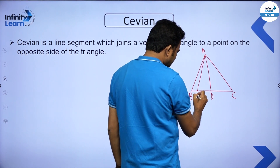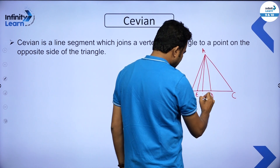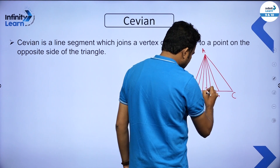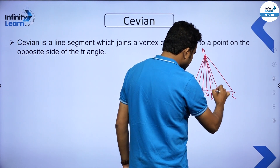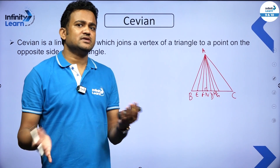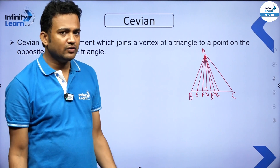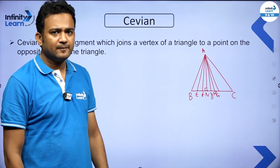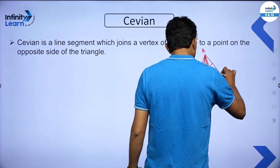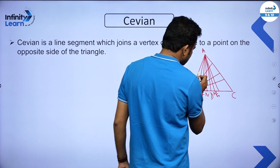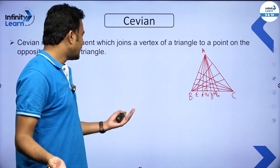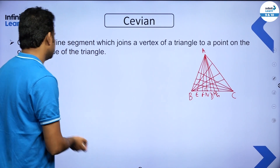Similarly, we can draw more cevians: AE, AF, AG. We can draw a cevian which is perpendicular, that is AN (the altitude). We can draw a cevian to the midpoint, that is AM (the median). So basically, altitude and median that we have studied are examples of cevians. We can draw infinite cevians in any triangle, and from any vertex - from B or from C as well.